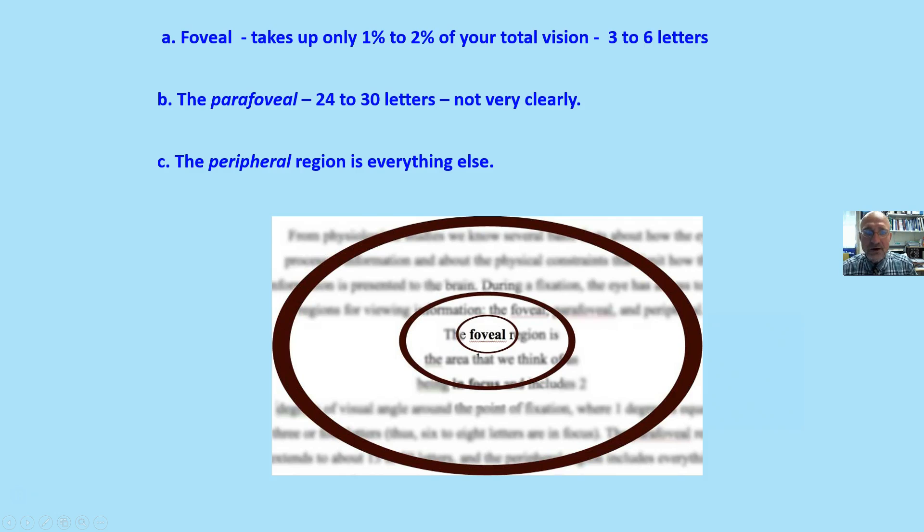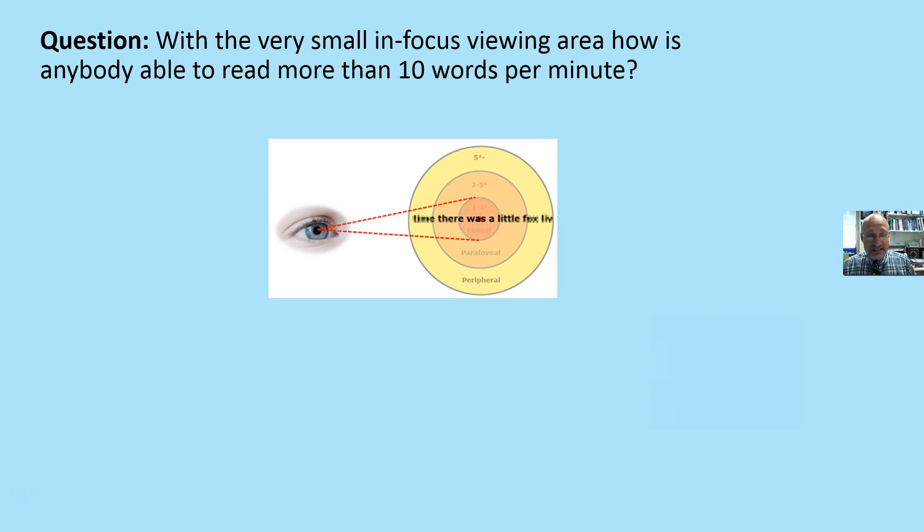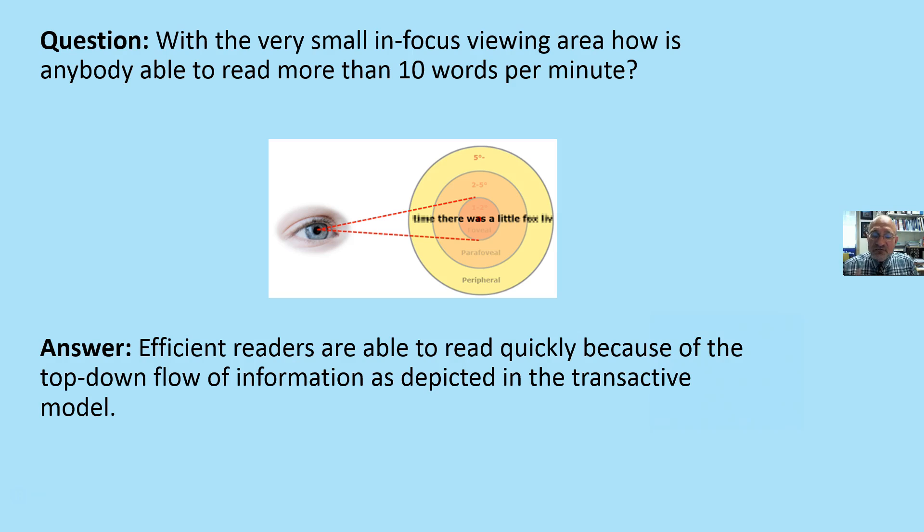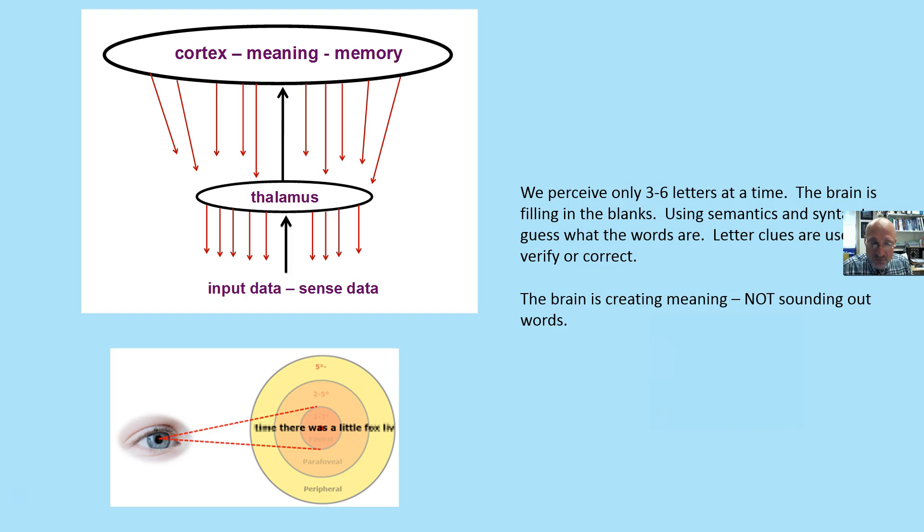The question is, with that very small in-focus viewing region, how is anyone able to read more than ten words a minute? The answer: efficient readers are able to read quickly because of the top-down flow of information as depicted in the transactive model. The brain is filling in the blanks and making predictions as we read.